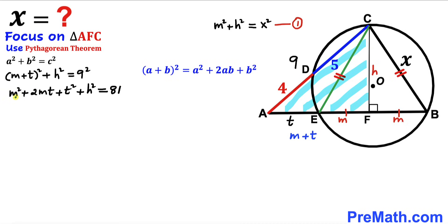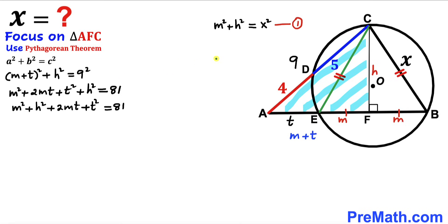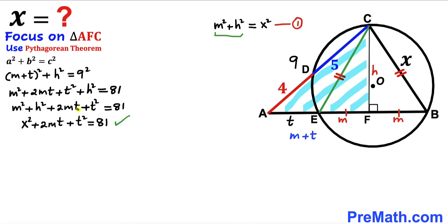Rearranging and grouping m² and h² together gives (m² + h²) + 2mt + t² = 81. From Equation 1, we know m² + h² = x², so we substitute to get x² + 2mt + t² = 81. We'll label this as Equation 2.